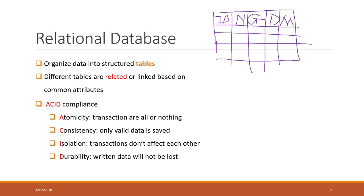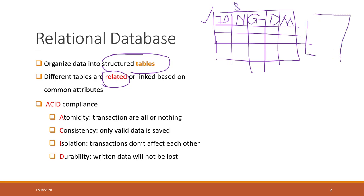In a relational database, we organize the data into tables. This is one table recording the students, and we may have other tables like professors, class information, etc. It is called a relational database because those tables are related with each other. For example, this is a student table, and we may also have an enroll list. In the enroll list, we may have the class number, CID, and also the student number and course number.